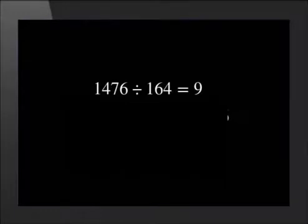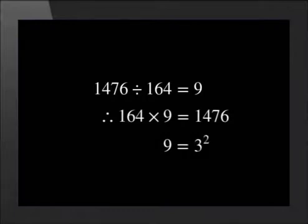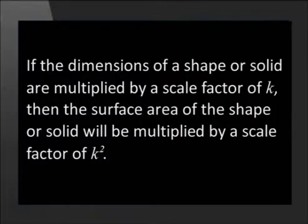1476 divided by 164 is equal to 9. This means that the surface area of 164 was multiplied by 9 to get the new surface area. Remember, 3 was the scale factor we multiplied the dimensions by, and 9 is equal to 3 squared. Let us summarise this into a rule: if the dimensions of a shape or solid are multiplied by a scale factor of k, then the surface area of the shape or solid will be multiplied by a scale factor of k².